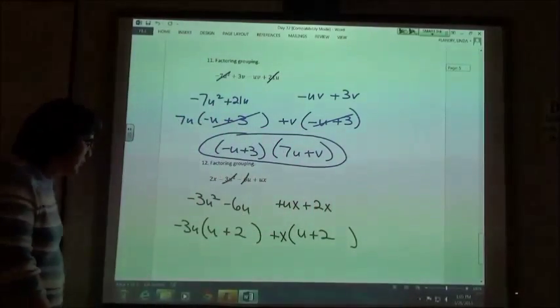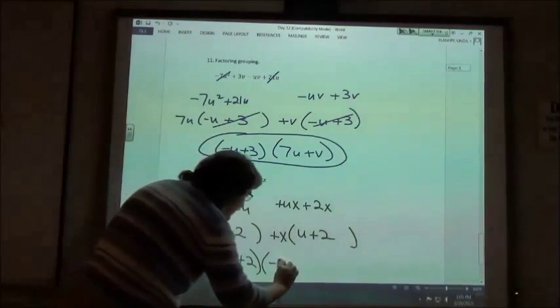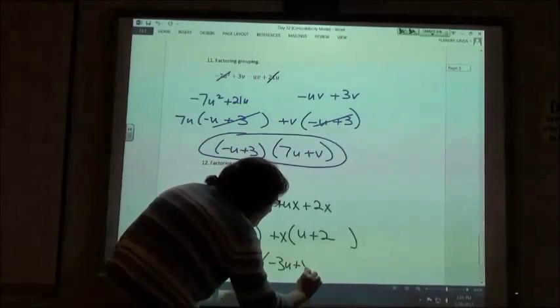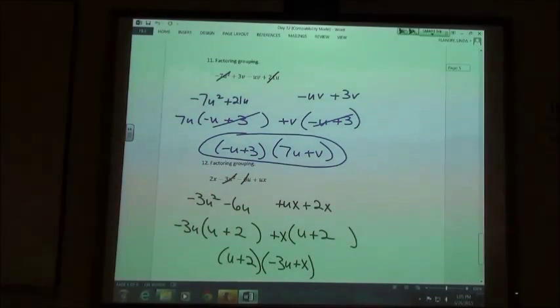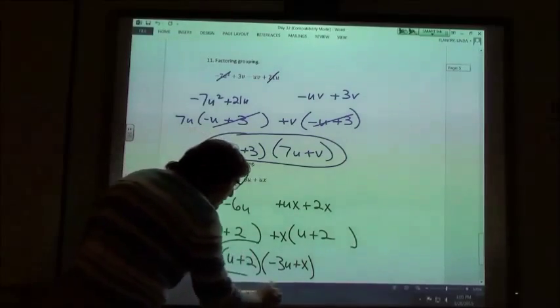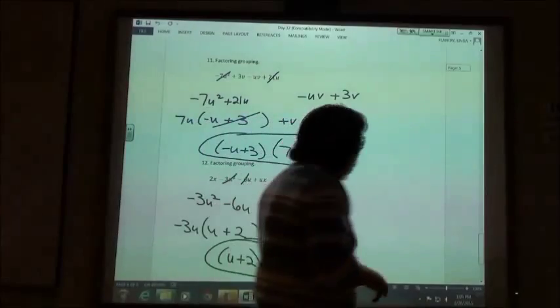So my factors, u plus 2 and negative 3u plus x. And again, if you weren't sure you did it right, you can always FOIL it out and check to see if you get your terms that you're supposed to get, and all your signs are right and all the good stuff.